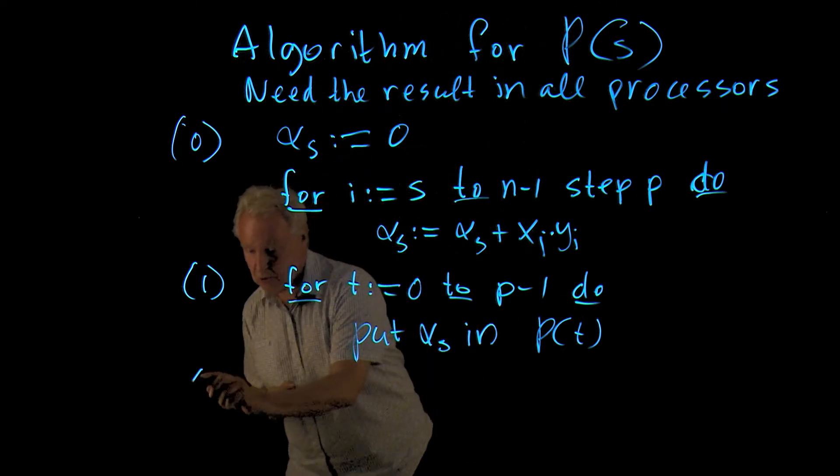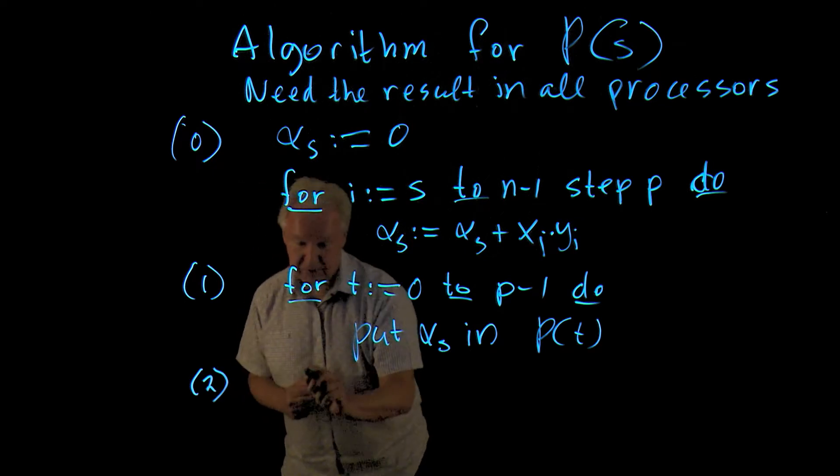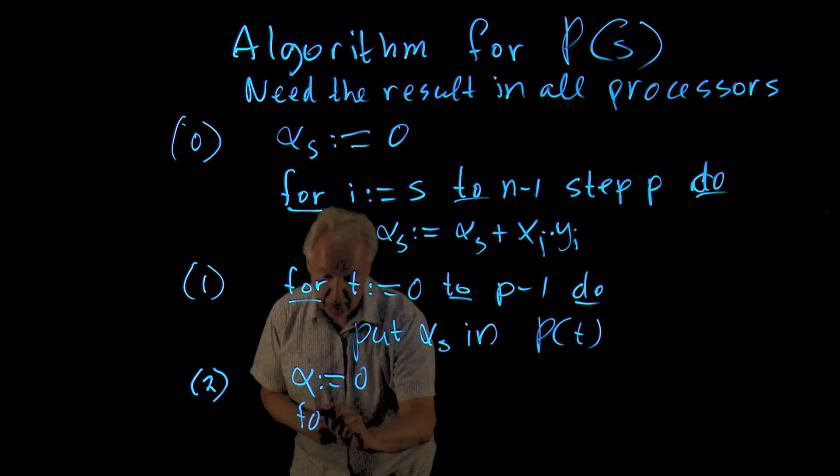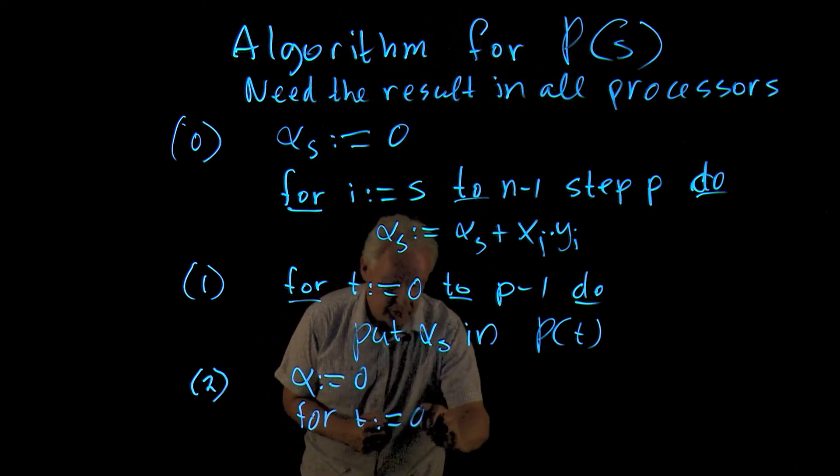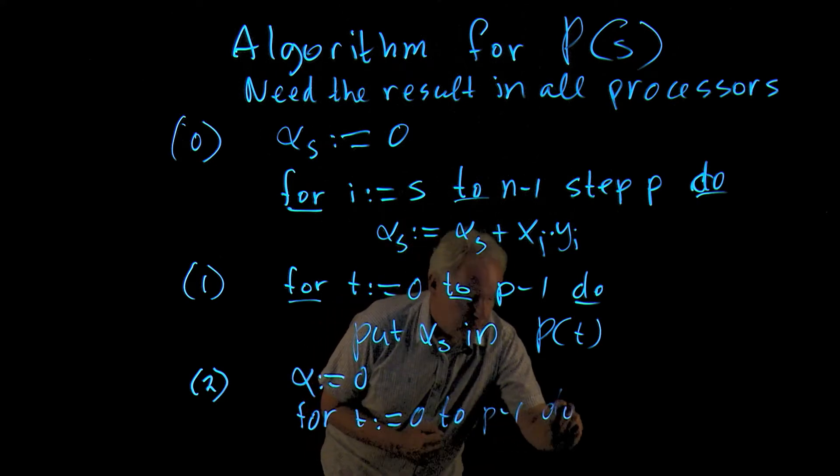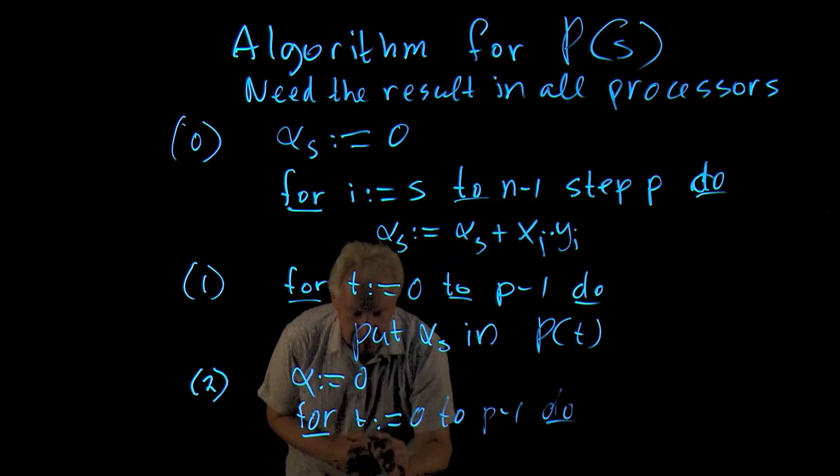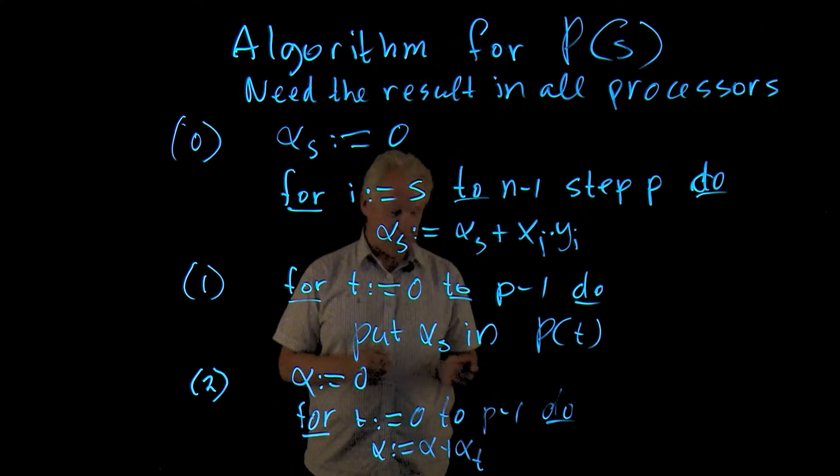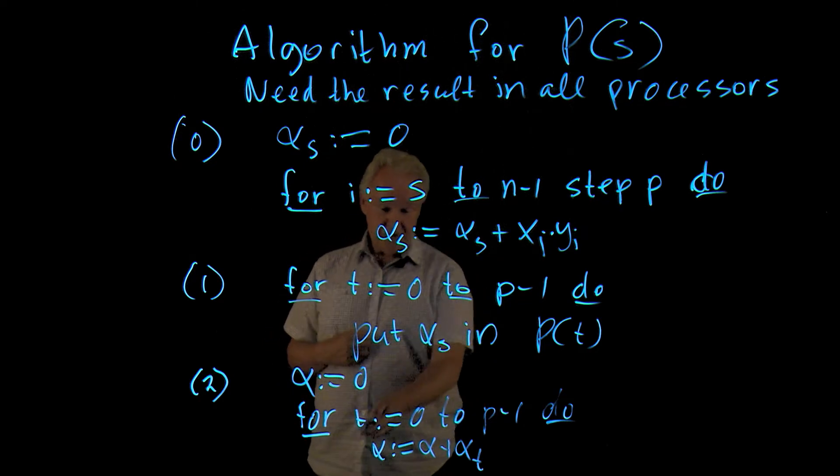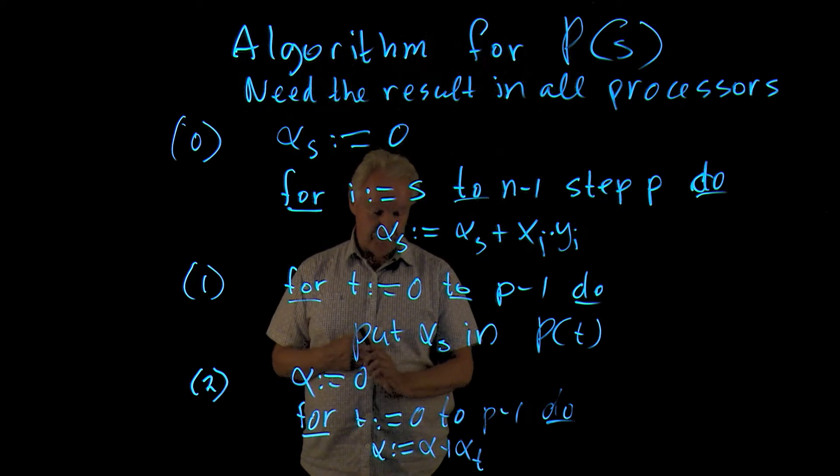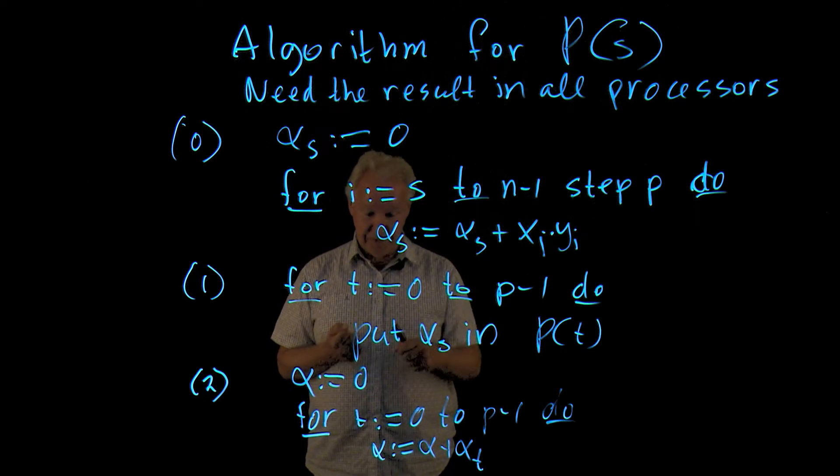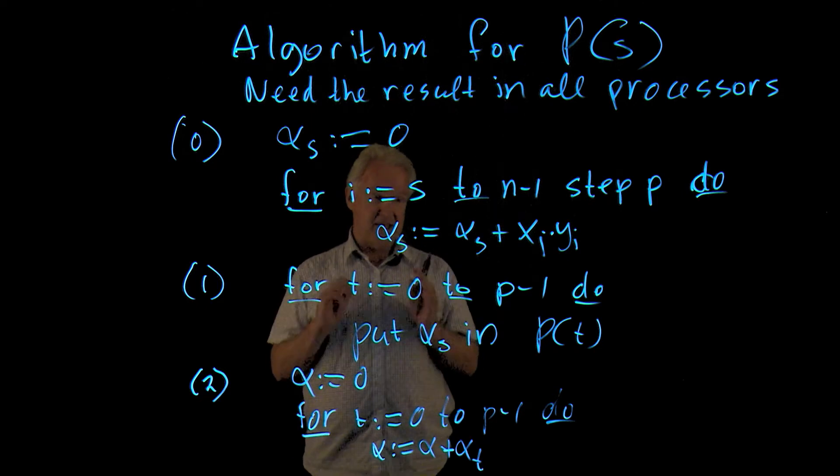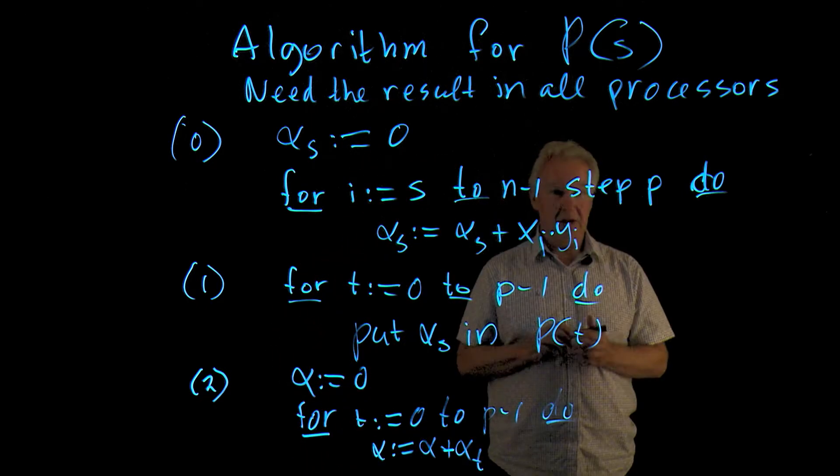And then super step 2, we start with alpha initialized to 0. And then we write for T equals 0 to P minus 1, do alpha becomes alpha plus alpha T. We add up all the alpha T's. Note that I use a dummy variable t here because it's the target processor, where it comes from, and I cannot use the variable s here because s is my unique identity.